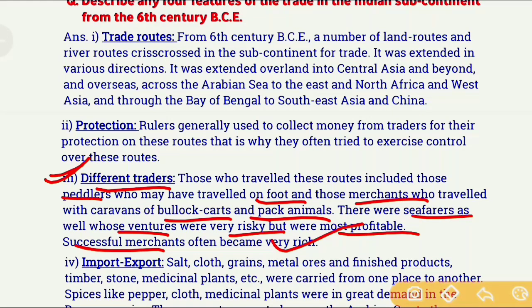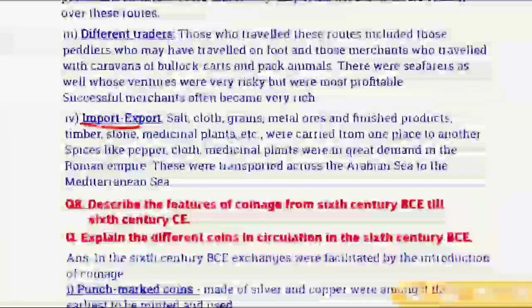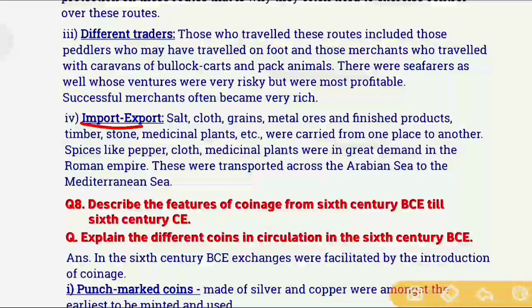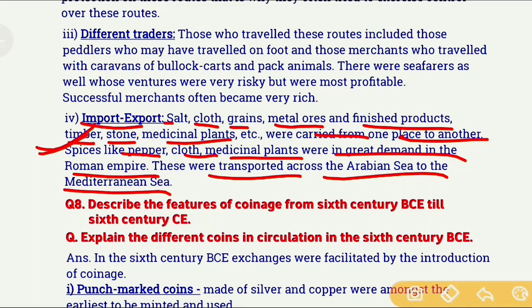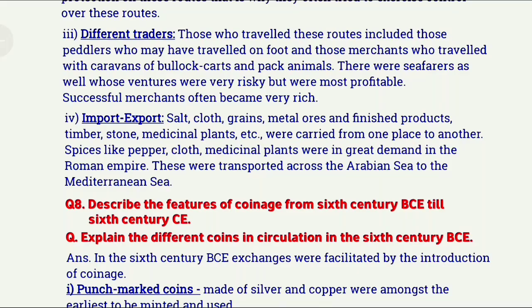The fourth important feature is import and export. Many raw materials and products were traded — salt, cloth, grains, metal ores, finished products, timber, stone, and medicinal plants were transported from one place to another. In the Roman Empire, there was high demand for spices like pepper, cloth, and medicinal plants. These goods were transported across the Arabian Sea into the Mediterranean Sea and then to the Roman Empire. This is how trade occurred in the Indian subcontinent during the 6th century BCE period.